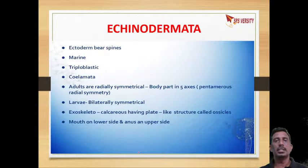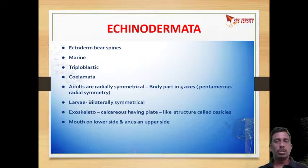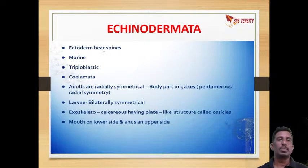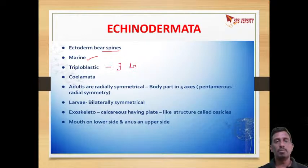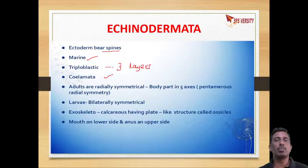The next phylum is Echinodermata. Echinodermata means the body has spines. They are mostly marine. They have three embryonic layers — ectoderm, mesoderm, and endoderm — so they are also coelomates like molluscans.